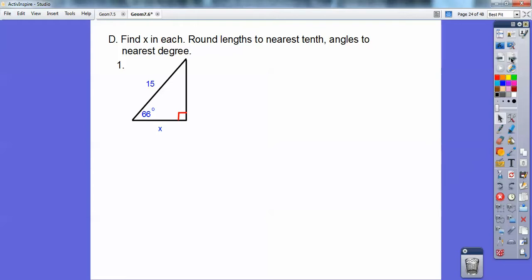And I have the adjacent leg. With respect to that 66, this is the adjacent leg, and we have the hypotenuse. That would be a cosine ratio, so we're going to do the cosine of 66 equals x over 15. Find the cosine of 66 is 0.4067, and then when you cross multiply, you get x equals 6.1.